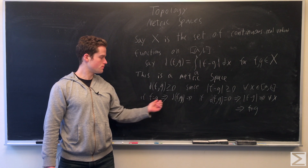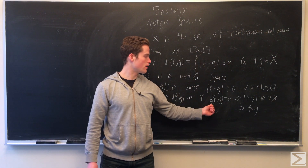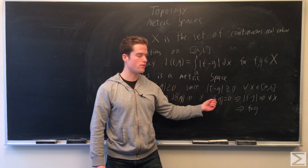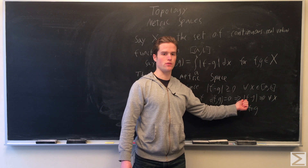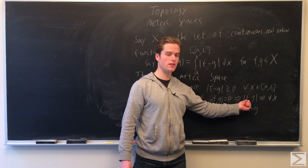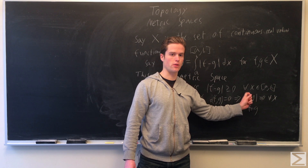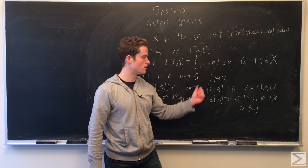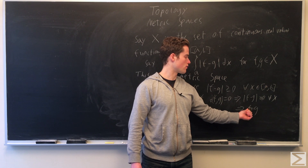If f equals g, clearly d(f, g) equals zero because the absolute value is zero everywhere. Now if d(f, g) equals zero, this is where the continuous part is important. A continuous function minus a continuous function is continuous, and the absolute value of a continuous function is also continuous. So if there is any point where the absolute value of f minus g is greater than zero, the integral would be some positive amount, meaning it would not equal zero. Therefore the absolute value of f minus g equals zero for all x, and so f(x) equals g(x) for all x.